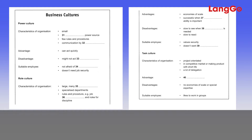One well-known writer has classified company cultures by identifying four major types. The first type is called the power culture, and it's usually found in small organizations. It's the type of culture that needs a central source of power to be effective, and because control is in the hands of just one or two people, there aren't many rules or procedures.